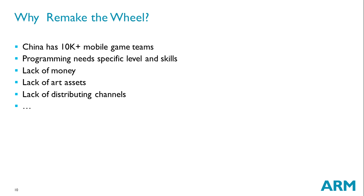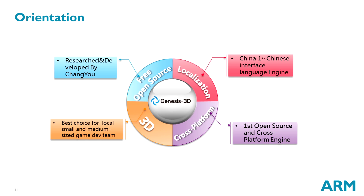Our orientation is that we research and deploy by Changyou. It's a China-first, Chinese interface language engine. Our team is very young — only three years old. It's the first open source and cross-platform engine of its kind. We have already made it open source and free for small teams. Currently four to five small teams are cooperating with us, and they will publish their games quickly in the middle of the year. It's the best choice for local small and medium-sized game dev teams.